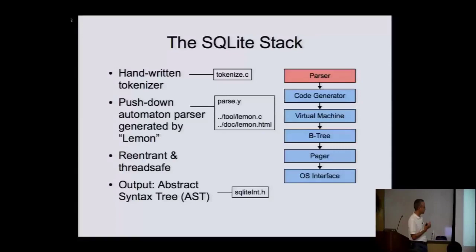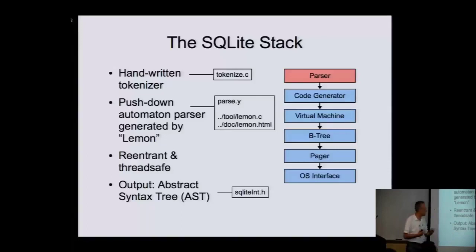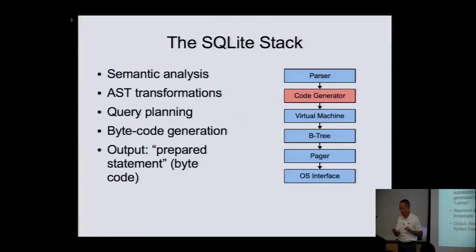These are the files where you can find this in the code. The source code to the Lemon parser generator is included in the source tree along with documentation, so you can learn about Lemon. The structures that define the abstract syntax tree are in the header file, and the tokenizer is in that other file.